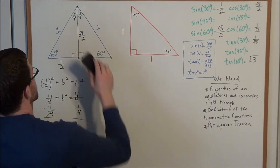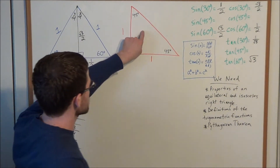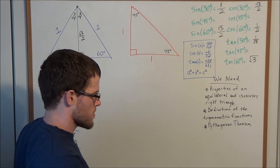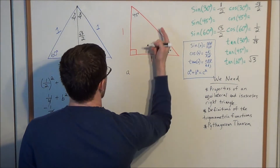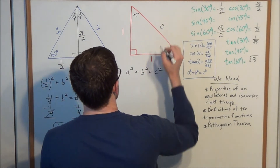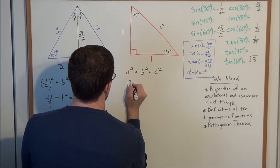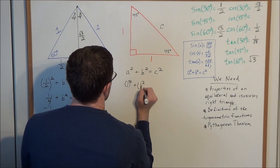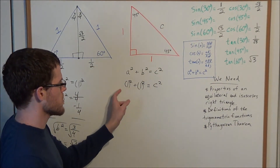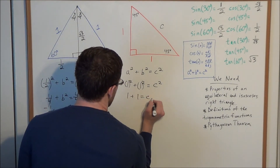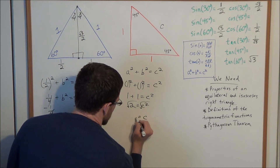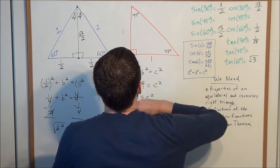Now let's look at the isosceles right triangle. By definition both angles are 45 degrees, and we label both legs as one. Using the Pythagorean theorem: a squared plus b squared equals c squared. We have one squared plus one squared equals c squared, giving one plus one equals c squared, so two equals c squared. Taking the square root of both sides, c equals the square root of two. We replace c with the square root of two.